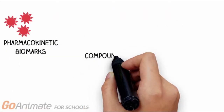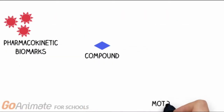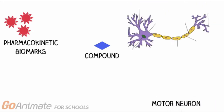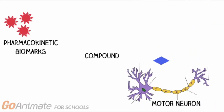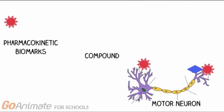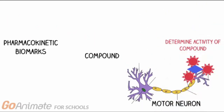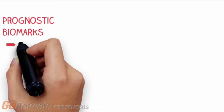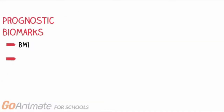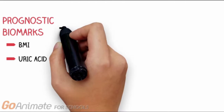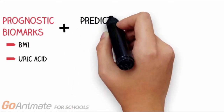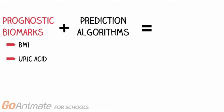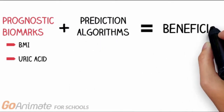Pharmacokinetic biomarkers can help identify if the compound under investigation is actually biologically active at the site of motor neurons. Additionally, prognostic biomarkers such as BMI and uric acid levels are also useful when combined with prediction algorithms.